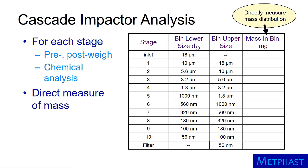Each stage of a cascade impactor must be analyzed separately to obtain size-resolved data. Stages can be pre- and post-weighed to directly measure the mass of all the particles, or analyzed chemically to directly measure the mass of certain chemical species.